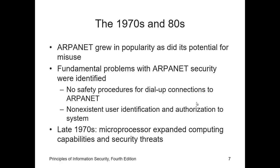In the 1970s and 1980s, ARPAnet grew in popularity and use, which created a potential for misuse of the system. In December of 1973, Robert M. McAfee indicated there were fundamental problems with ARPAnet security. Individual remote users did not have sufficient controls and safeguards to protect data against unauthorized remote users. There were no safety procedures for dial-up connections to ARPAnet, user identification and authorization were non-existent, and phone numbers were widely distributed and posted publicly, giving hackers easy access to ARPAnet.